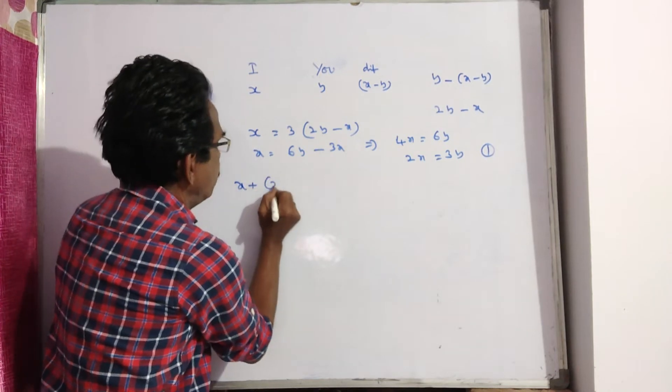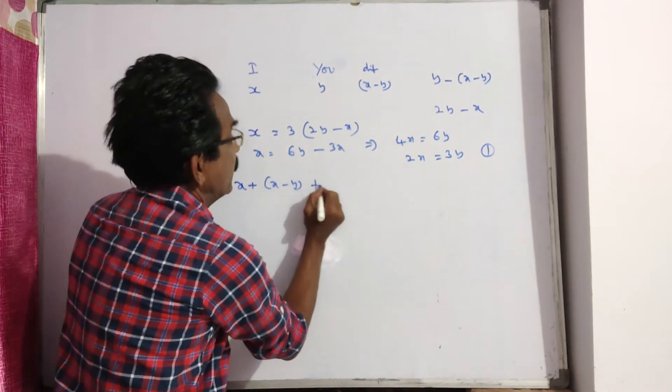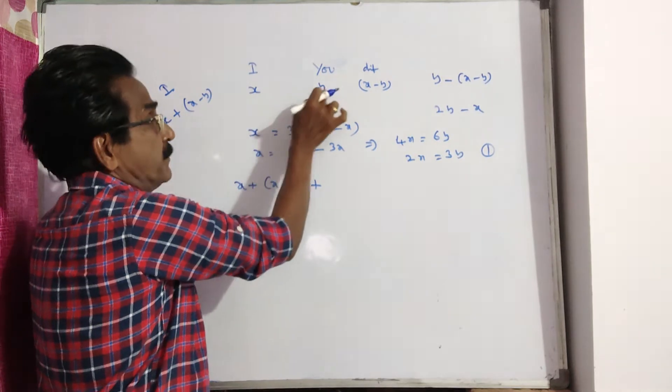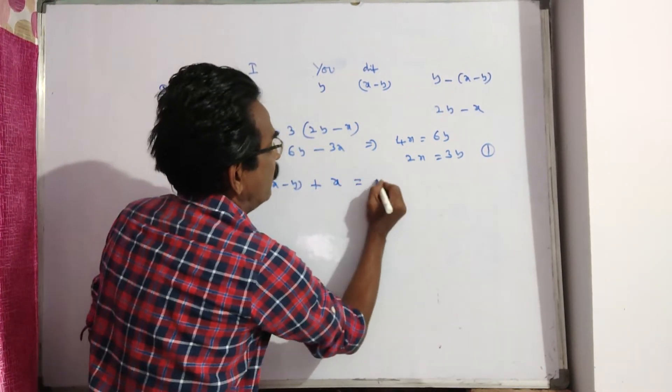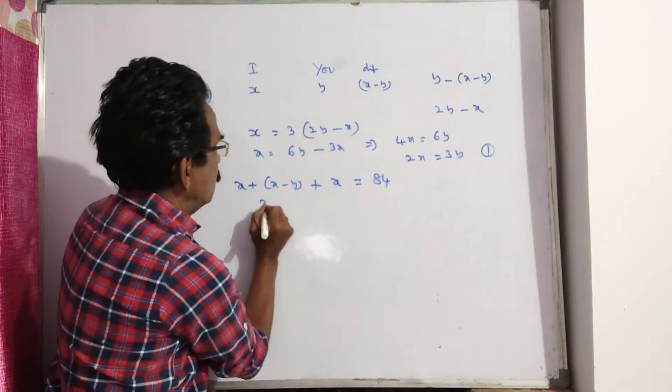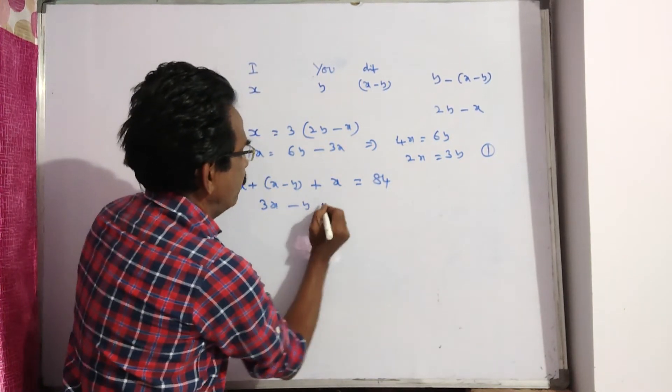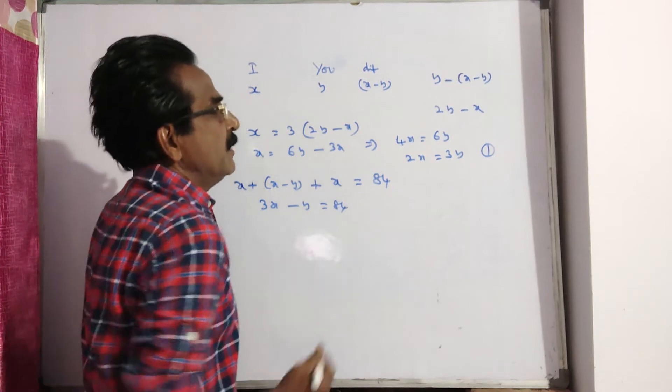So, my age, X plus X minus Y plus your age. Your age will be X because you attain my age. So, your age is X and sum of our ages is 84. So, 3X minus Y is equal to 84.